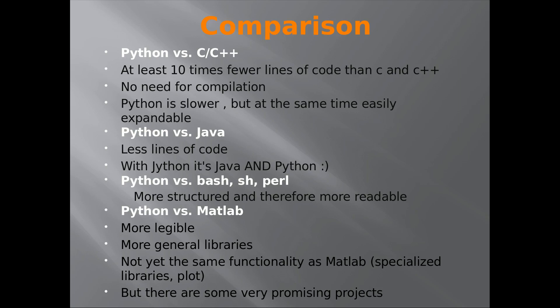Python vs. Java: there are fewer lines of code with Java. And with Jython, it's Java and Python combined. Python vs. Bash, sh, and Perl: Python is more structured and therefore more readable.